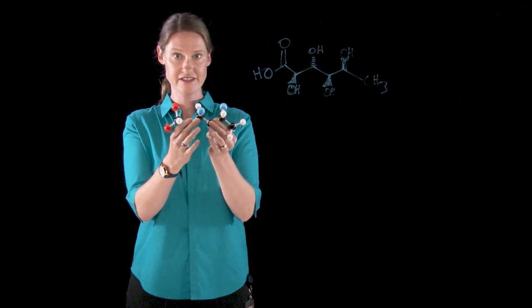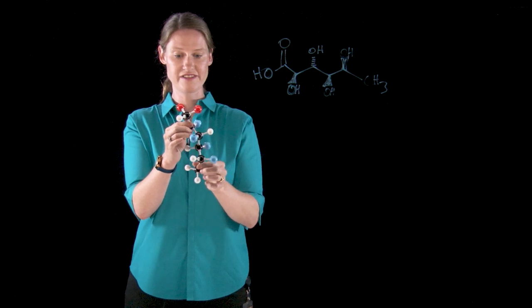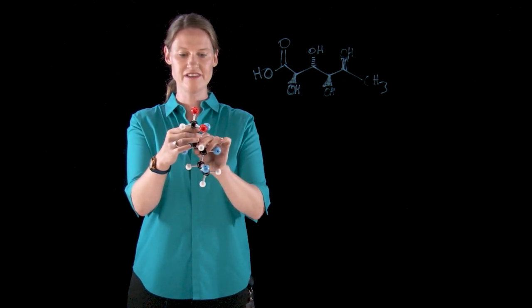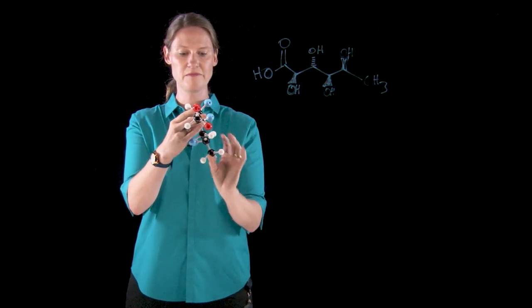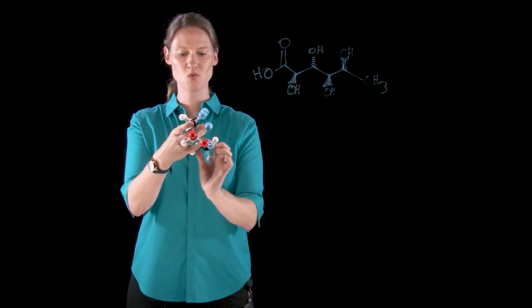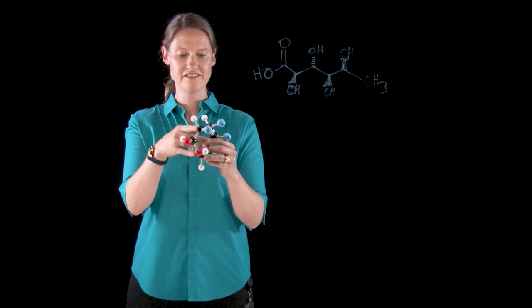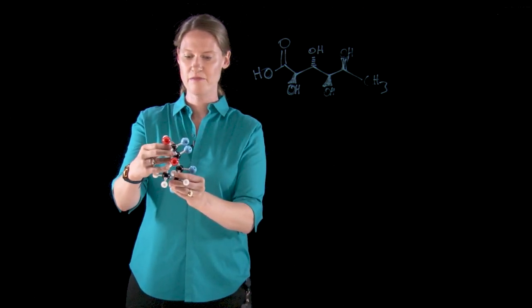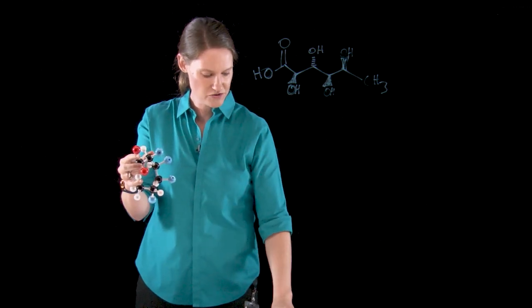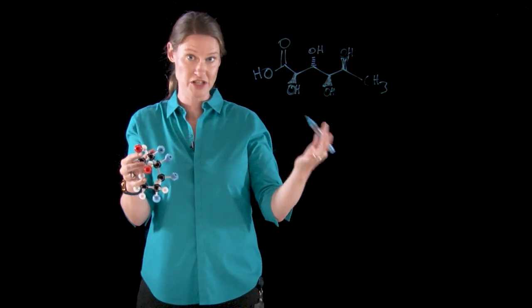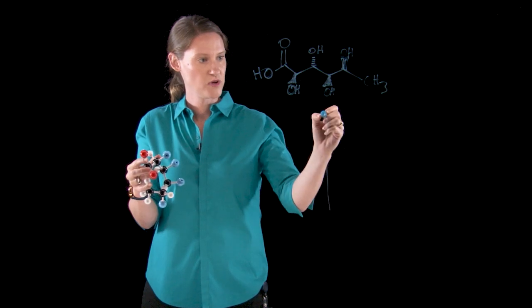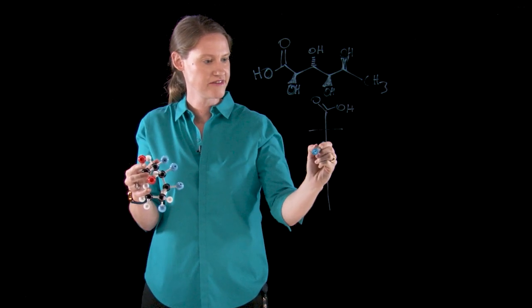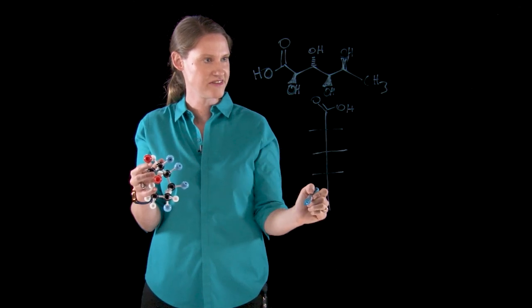What a Fischer projection does is it takes this wedge and dash and turns it on its head. We need to look at it not just from the top — what it really means is that everything that's not in the carbon backbone is coming directly out towards me. This causes the molecule to curl up, which is not surprising because most sugars are six-membered rings. It shows me the backbone like this.